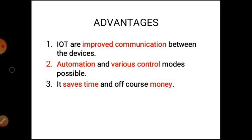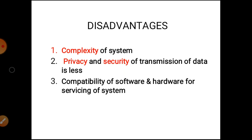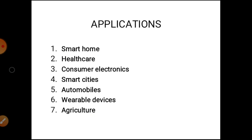Disadvantages of IoT: the system of IoT is complex. The privacy and security of data transmission is less as compared to other transmitting devices. By using IoT, the privacy and security of data transmission is less compact. Compatibility of software and hardware is also a challenge. These are the disadvantages.